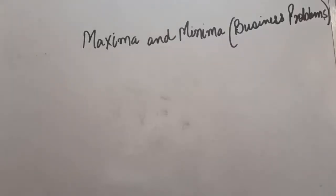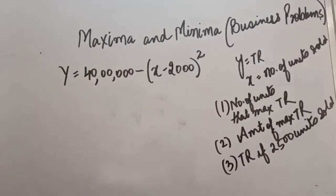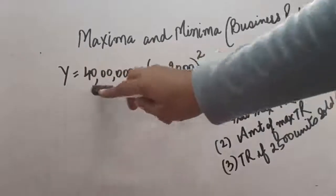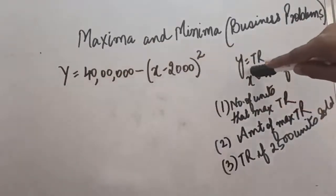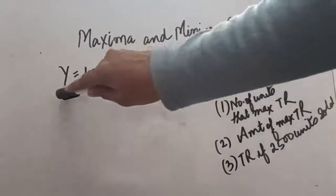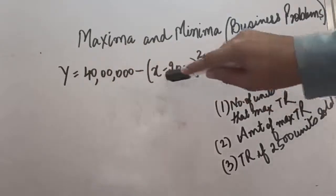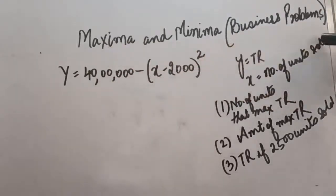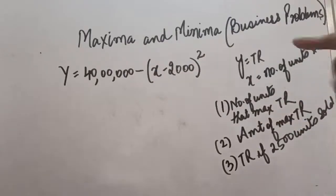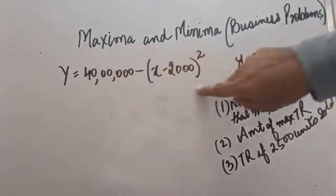There are certain business questions that can be solved by the maxima and minima method, like revenue problems and stock or inventory issues. Let us see some examples. This is a business problem in which we have been given a function y, which stands for total revenue. Here x means number of units sold. We have to find the number of units that maximize the total revenue.